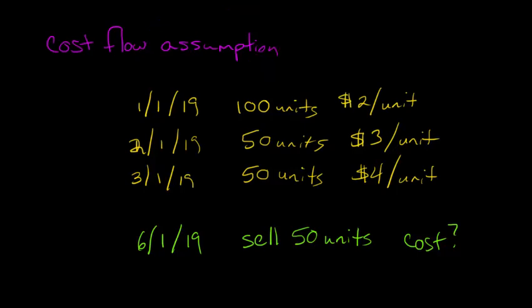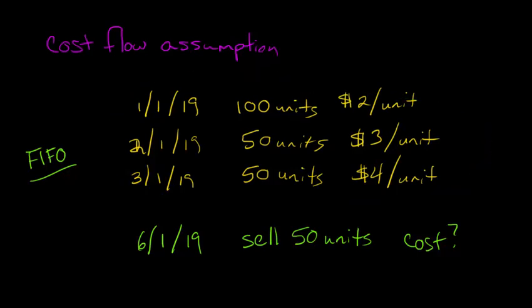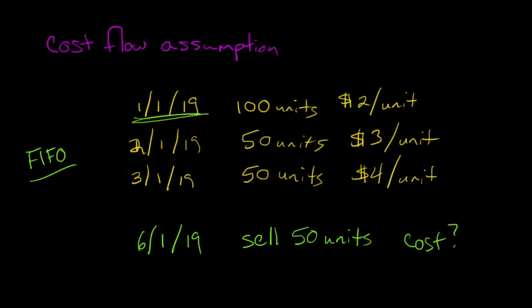And what assumptions can we make? Well, one is called FIFO. FIFO is basically first in, first out. That's what it stands for, first in, first out. So the first units that we purchased, so we got all this here, and the first ones we purchased chronologically are here, January 1st. And so we take these 50 units out of that 100, and so then our cost would be this $2 per unit. So that's the FIFO.